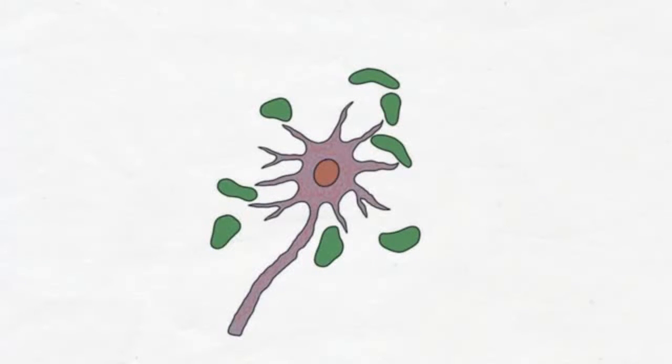During Alzheimer's, however, misfolded forms of amyloid beta clump together in deposits called amyloid plaques.